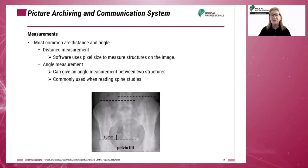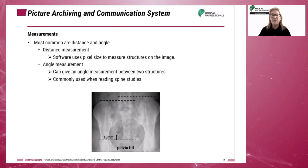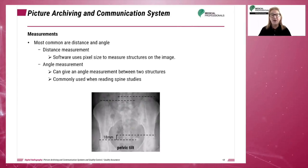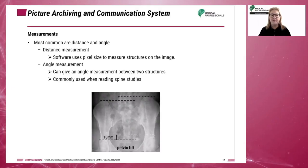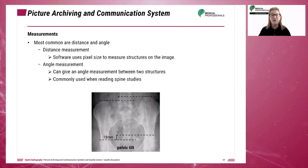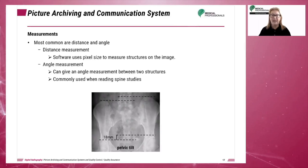Various measurement functions are available on PACS stations. The most common is the distance measurement, where the software uses the pixel size — a known measurement — to measure structures on the image. Another common function is the angle measurement, which measures the angle between two structures and is commonly used when reading spine studies.